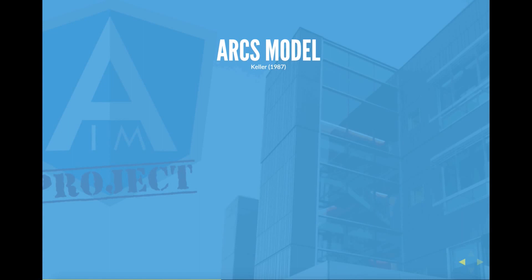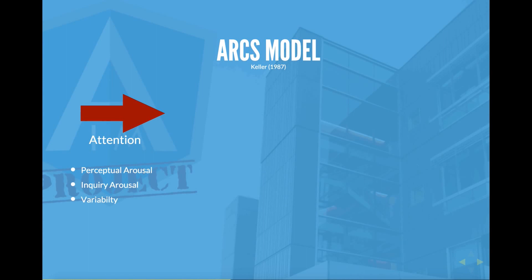With each of the four pieces of the model, there are process questions you can use as you develop content and decide how you want to implement it. The first piece is attention, and each category has a few subcategories. Within attention: perceptual arousal — what can I do to capture their attention? Inquiry arousal — how can I stimulate an attitude of inquiry? And variability — how can I maintain their attention?